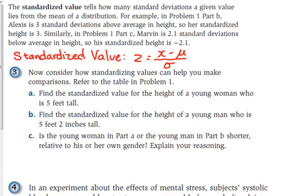So here the standardized value tells you how many standard deviations a given value lies from the mean of a distribution. So for example, from problem one part B, Alexis is three standard deviations above average in height. So we would say her standardized height is three. In part C, Marvin was 2.1 standard deviations below average, so his standardized height is negative 2.1.